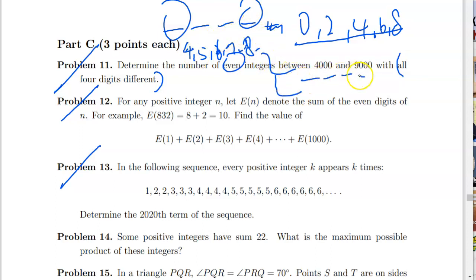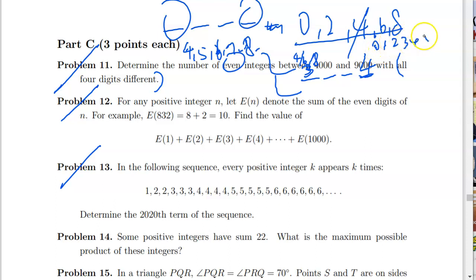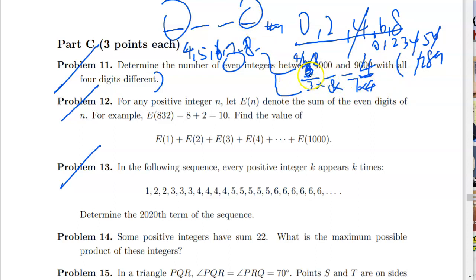Case 1: the 1000s digit is either 4, 6, or 8 — so we have 3 choices there. The units digit then has 4 remaining even choices (since one even digit is taken). That leaves 8 numbers for the hundreds digit and 7 for the tens digit. So case 1 gives 3 × 8 × 7 × 4 = 672 cases.